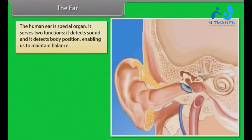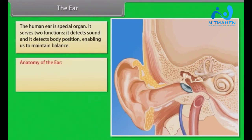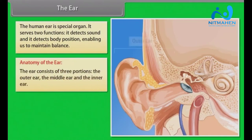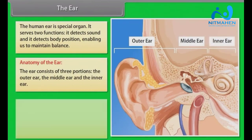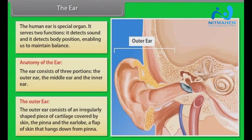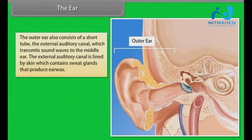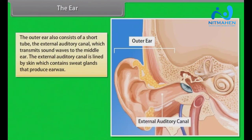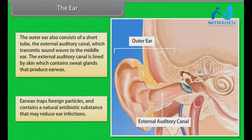The human ear serves two functions: it detects sound and detects body position, enabling us to maintain balance. The ear consists of three portions: the outer ear, the middle ear, and the inner ear. The outer ear consists of the pinna — an irregularly shaped piece of cartilage covered by skin — and the ear lobe. It also includes the external auditory canal, which transmits sound waves to the middle ear and is lined with skin containing sweat glands that produce ear wax.